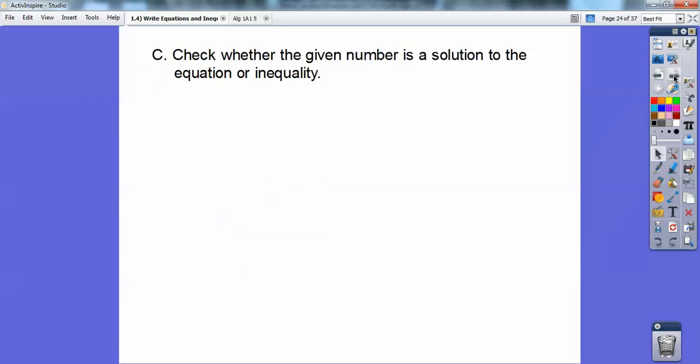Check whether the given number is the solution to the equation or the inequality. So, 24 minus 3D equals 9, and they want you to check to see if 5 is the solution to this. So, plug in 5 right there. 24 minus 3 times 5, well, 3 times 5 is 15. 24 minus 15, yep, that equals 9. So, 5 is the solution, so that's what they want you to do. They want you to plug it in to see if it works.